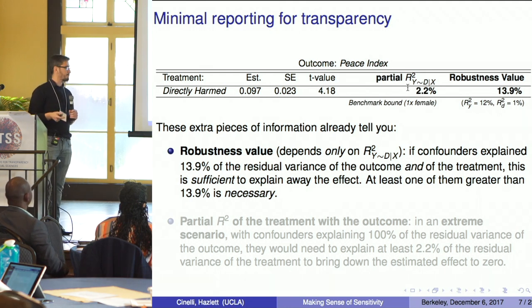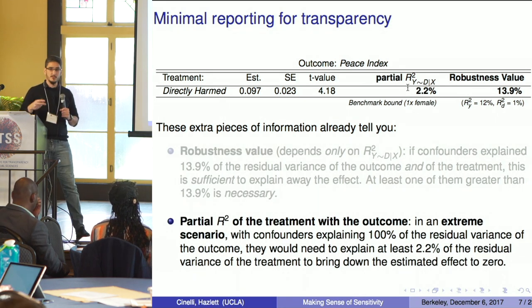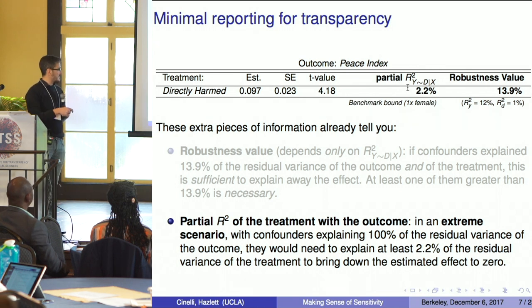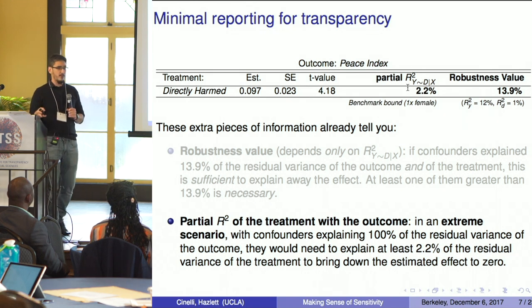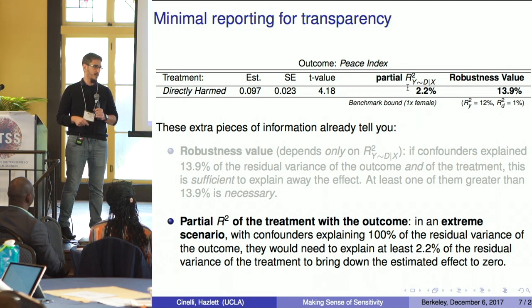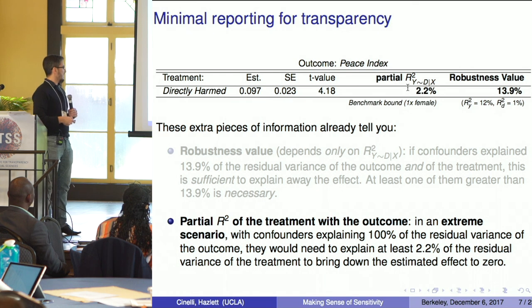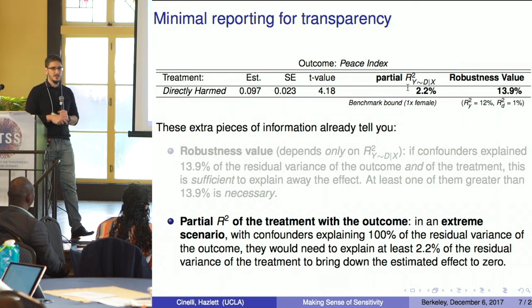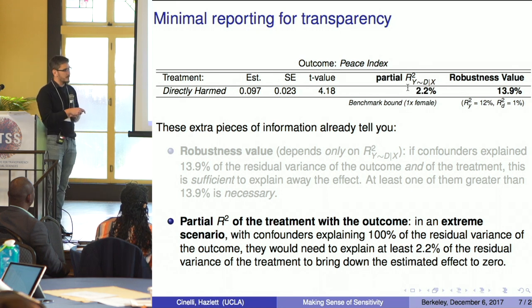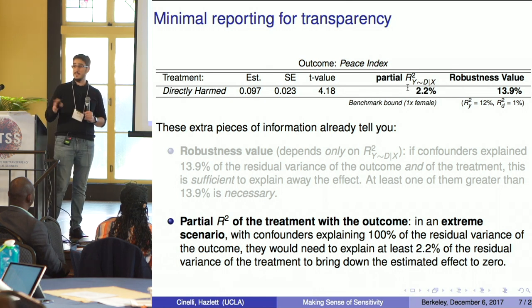The robustness value answers the first question: how strong a confounder would need to be. Now, why also present the partial R-squared of treatment with outcome? Because this quantity represents an extreme-scenario sensitivity analysis. If you had a super-confounder that explained 100% of the residual variance of your outcome, this is exactly how strongly it would need to be related to your treatment to explain away your effect. So even gathering all possible confounders with a deterministic relationship to the outcome, this is the minimum association with treatment required.